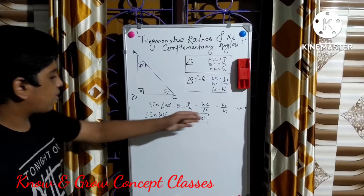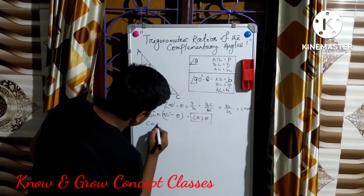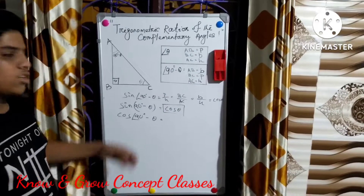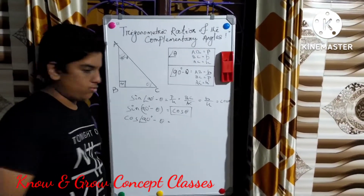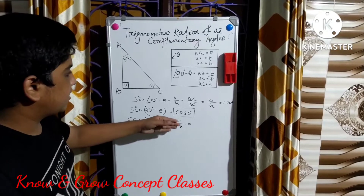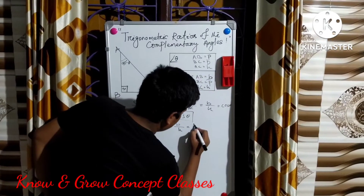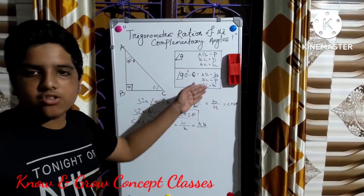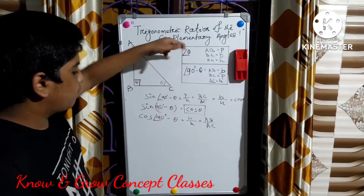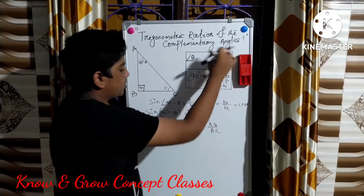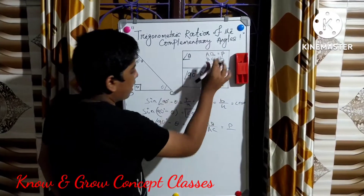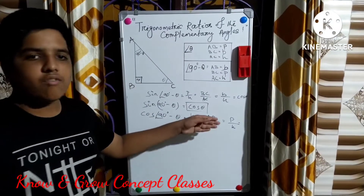Now let us find the ratio of cos(90° - θ). The ratio of cosine is base by hypotenuse. If we consider 90° - θ, the base is AB and the hypotenuse is AC. Comparing with angle theta, AB is the perpendicular and AC is the hypotenuse, which is the ratio of sin θ.